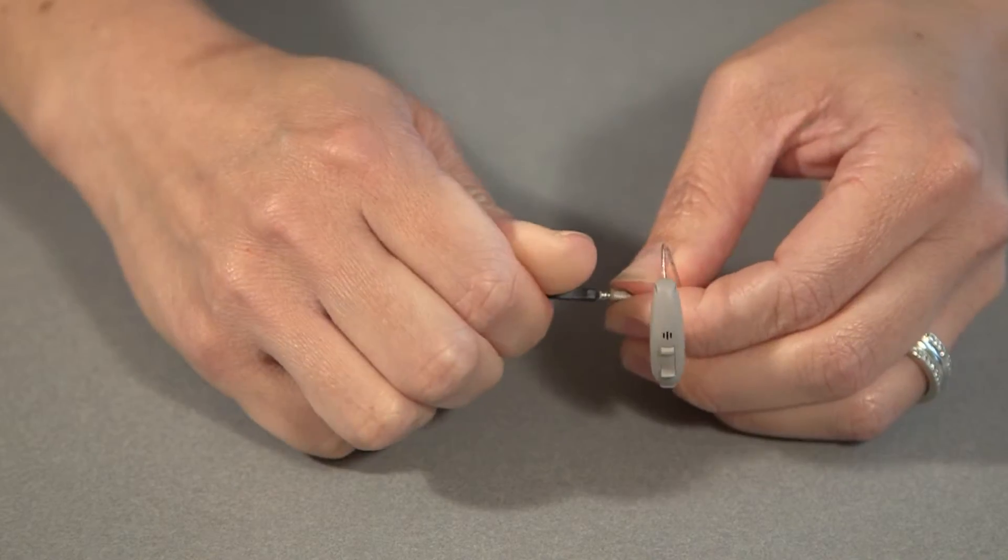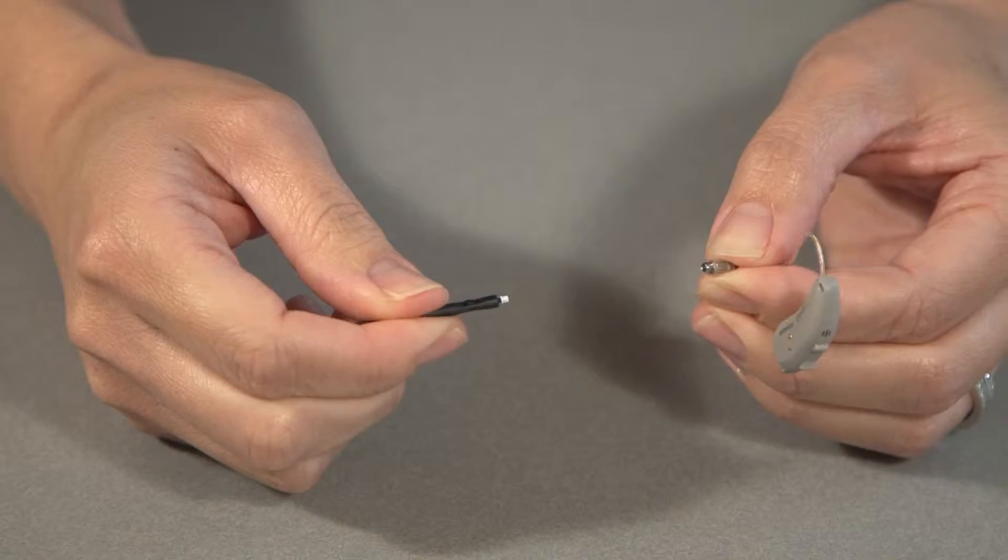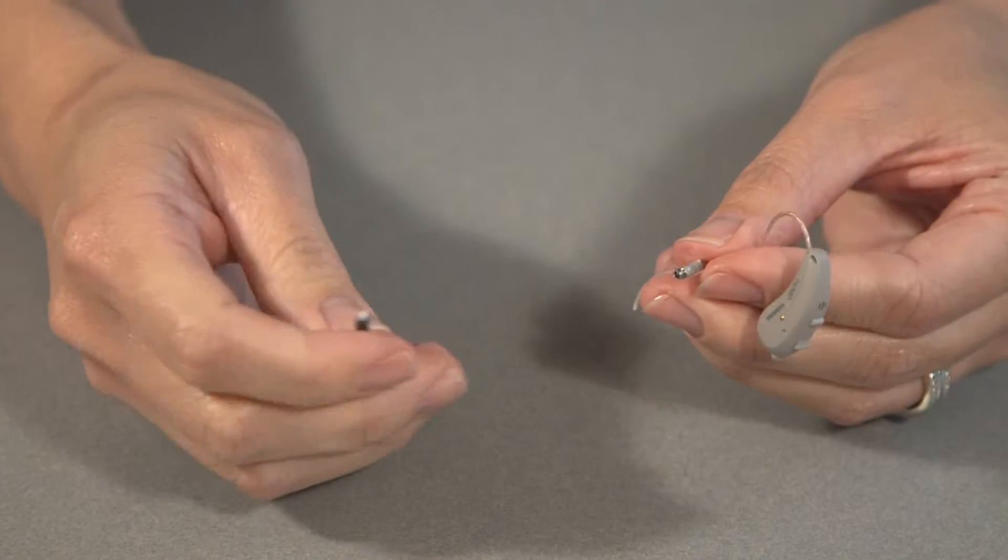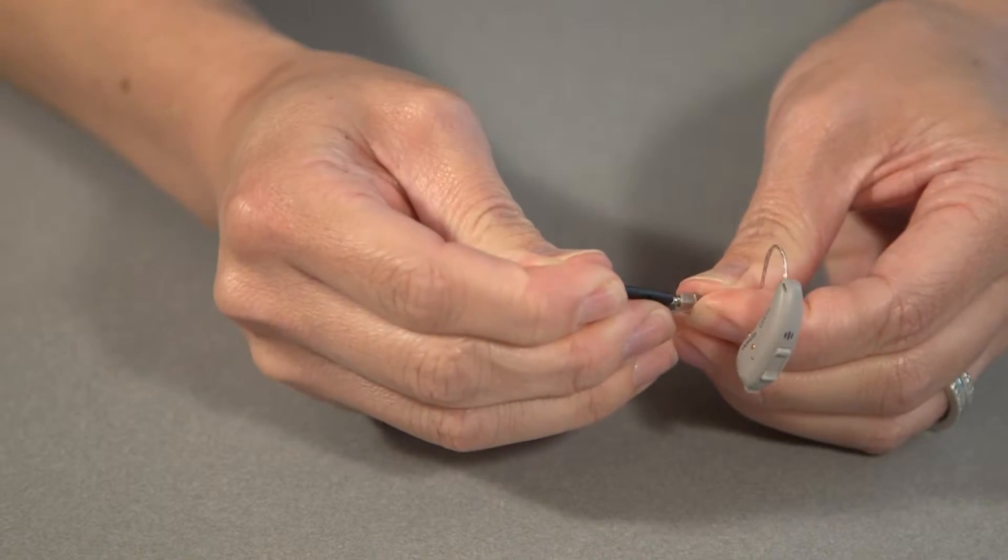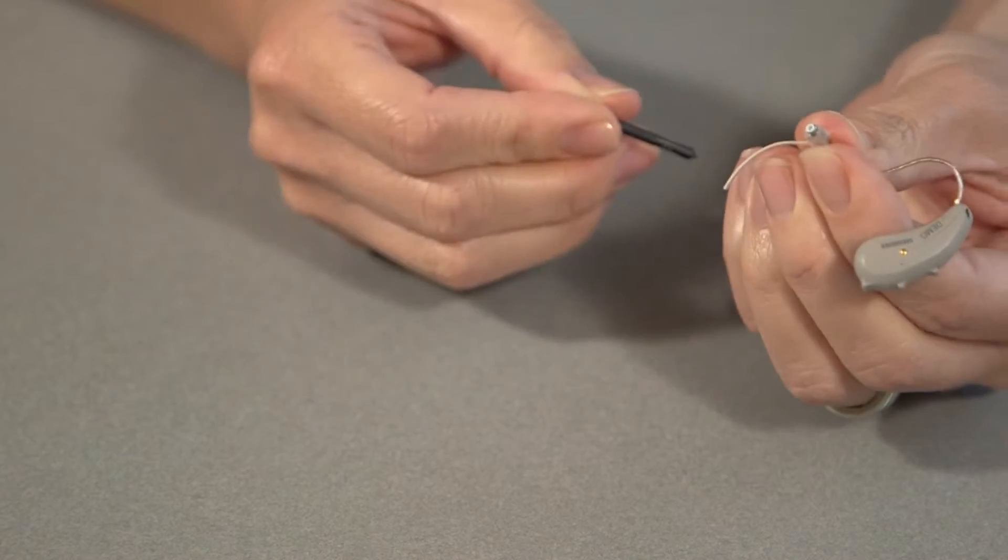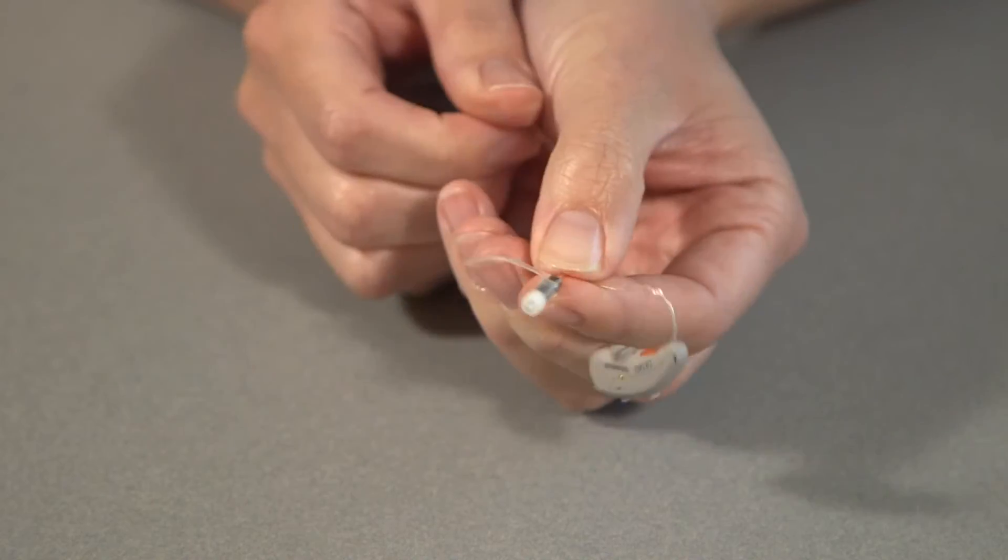To replace that, just twist it in and pull it out, turn the stick around and insert a new one and then this just gets tossed in the garbage. Then put the new dome, you snap it on the end just like that.